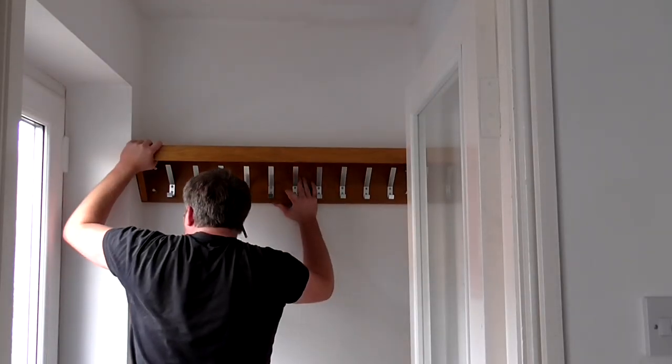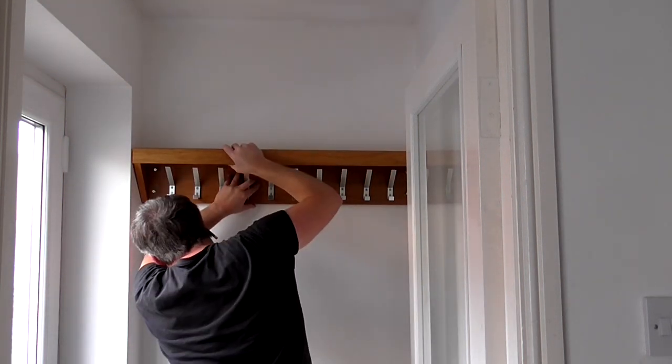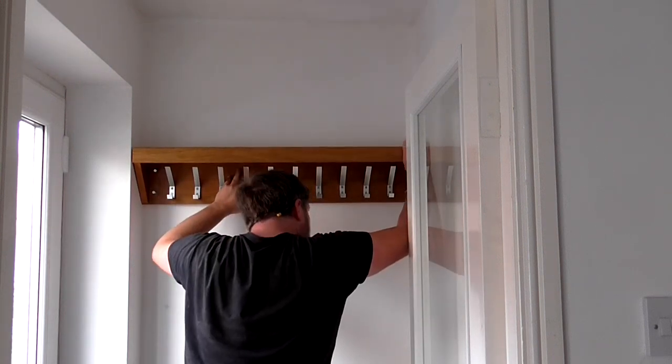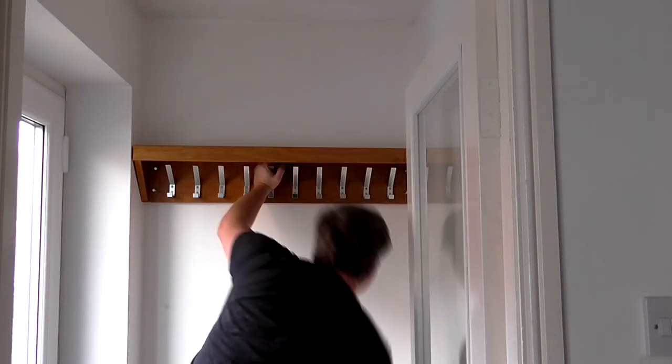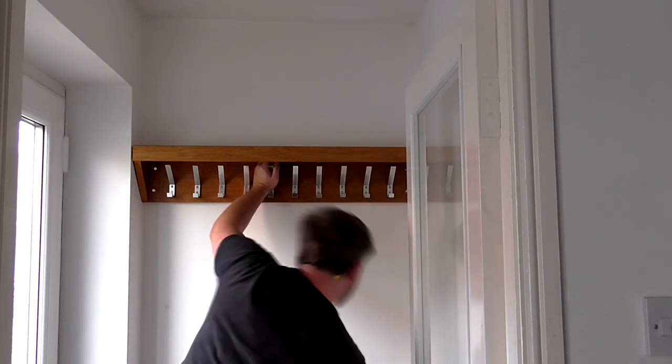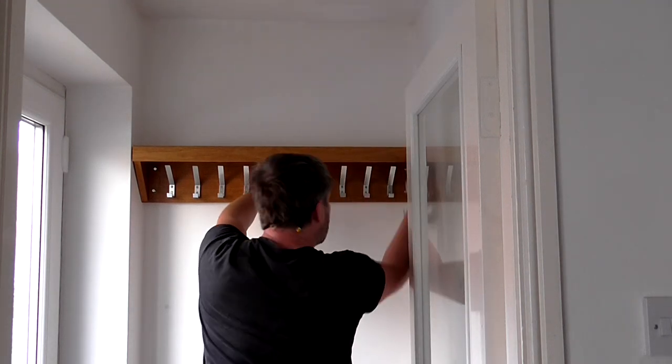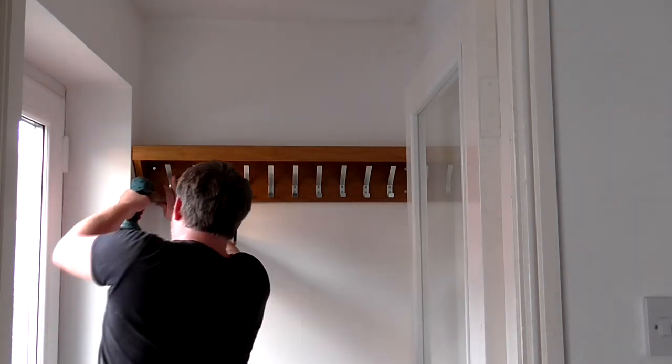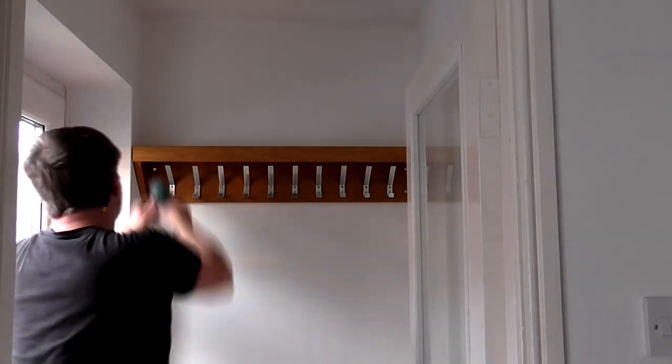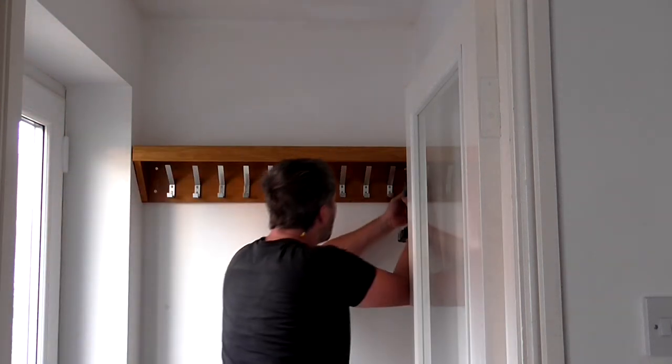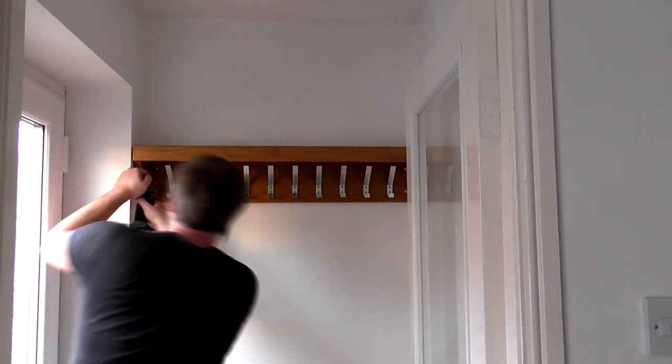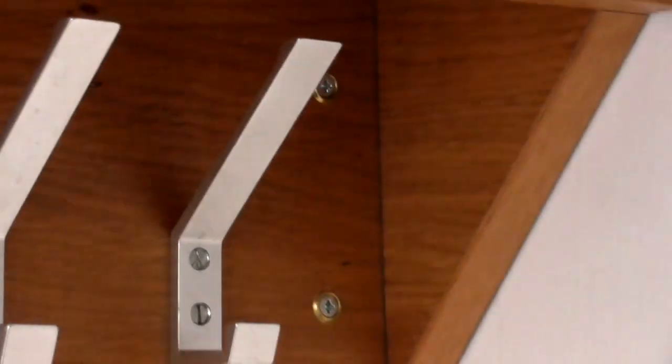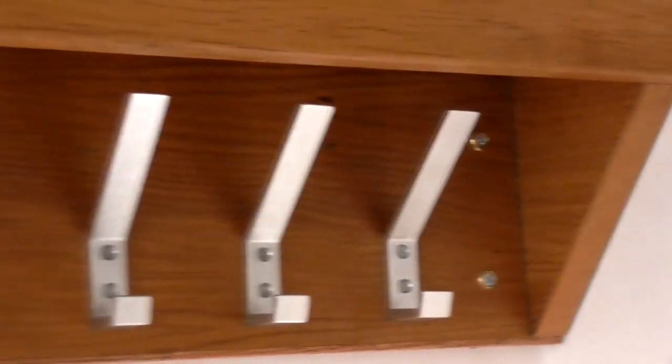By this point I'd already drilled holes into the wall and inserted some wall plugs, but I didn't film that part. And here I'm making sure that the screws are in line with the wall plugs before screwing them in. And this was a little bit awkward. I used some brass washers with the screws just to make them look nicer.